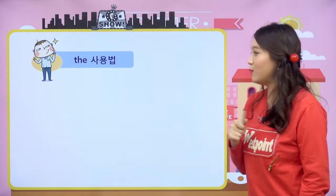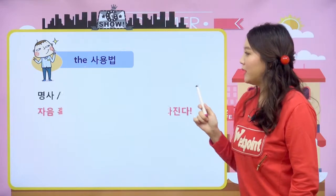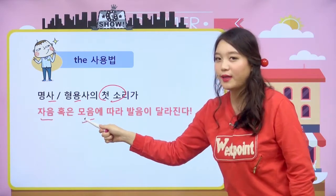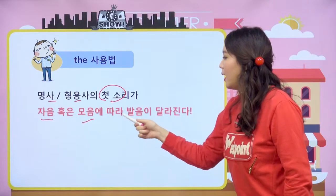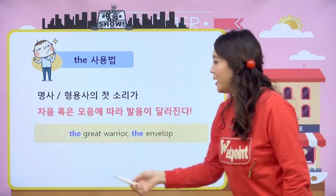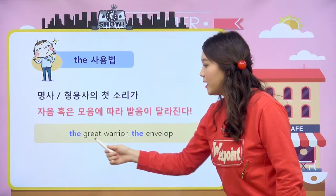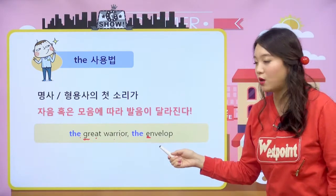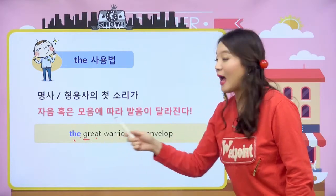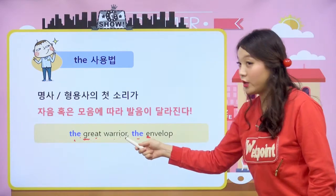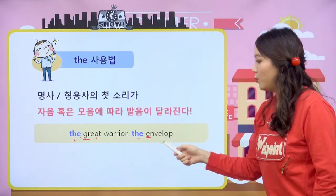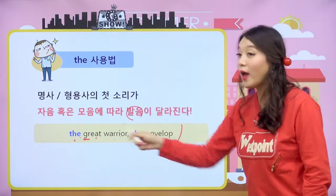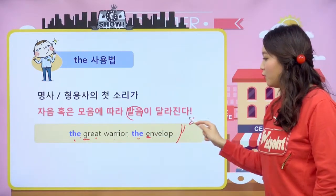그리고 the는 셀 수 있는 명사, 셀 수 없는 명사, 단수, 복수 앞에 모두 사용이 가능합니다. a나 an 같은 경우에는 셀 수 있는 명사만, 하나일 때만 사용이 가능했는데 the는 모두 앞에 사용 가능하다는 것이 차이점이에요. the의 사용법: 명사나 형용사의 첫 소리가 자음일 때나 모음일 때 모양은 똑같아요. 다만 발음이 달라져요. 자음이면 'the(더)', 모음이면 'the(디)'라고 읽습니다.